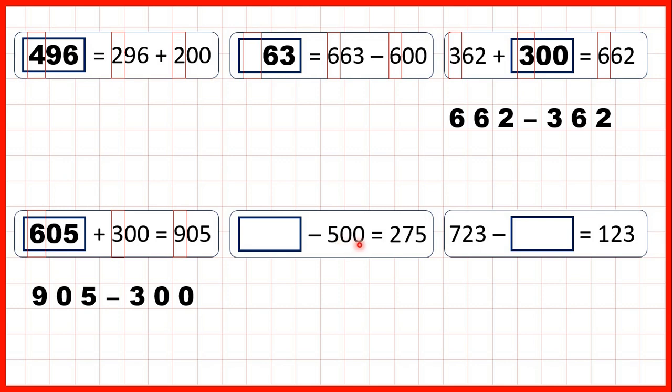Something minus 500 equals 275. So here, it's the first number of a subtraction that's missing. And remember, subtraction problems can be read backwards as addition problems. So to find our missing number, we can work out 275 plus 500. That's 775.